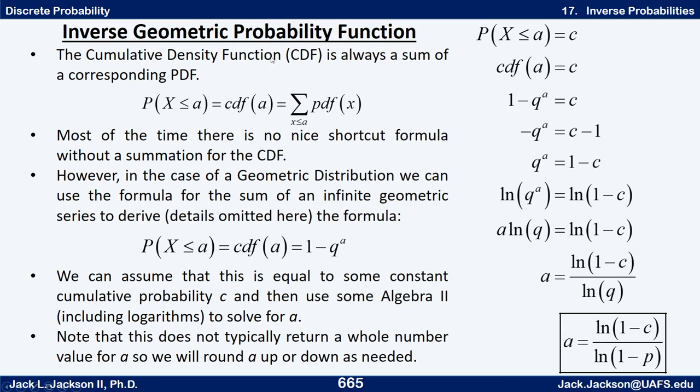Now most of the time we're kind of out of luck in the sense that there's no shortcut for this. There might be a nice formula for the PDF, and often there is, but then to find the CDF we just simply have to literally find everything in that table up to a certain point and add them up. We might be able to automate this with a calculator program, which we've done in some cases, or that's built in, but that's basically what we have to do.